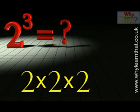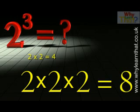This is now easy to work out. 2 times 2 equals 4, and 4 times 2 equals 8. So 2 to the power 3, or 2 cubed, equals 8.